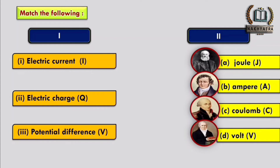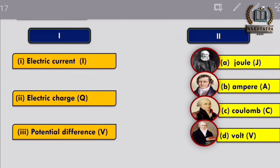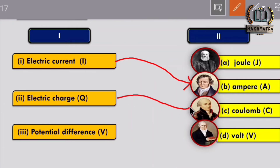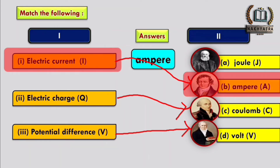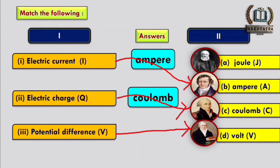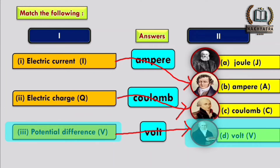Now let's solve some questions. Pause the video and try to solve them by yourself first. The SI unit for electric current is ampere, for electric charge it is Coulomb, and for potential difference it is volt. Electric current — ampere; electric charge — Coulomb; potential difference — volt.